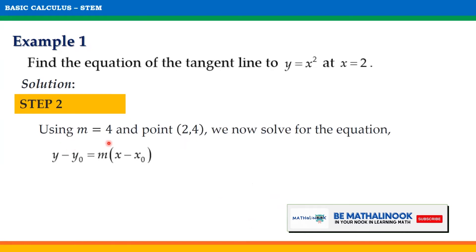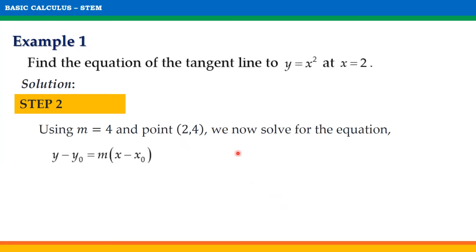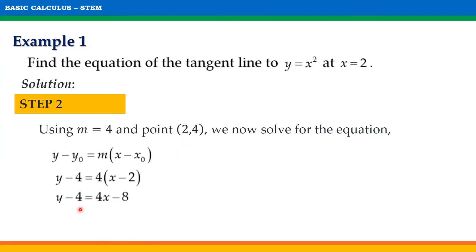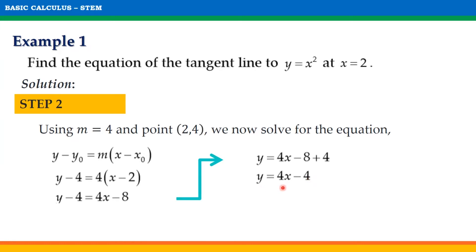Using m equals 4 and the point of tangency with coordinates (2, 4), we can now solve for the equation using the point-slope formula: y minus y sub 0 equals m times the quantity x minus x sub 0. Substituting the values, we have y minus 4 equals 4 times the quantity x minus 2. Multiplying gives y minus 4 equals 4x minus 8. Combining constants, we get y equals 4x minus 4. Thus, the equation of the tangent line to y equals x squared at x equals 2 is y equals 4x minus 4.